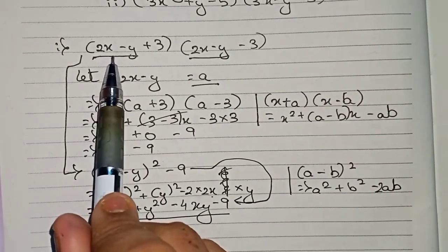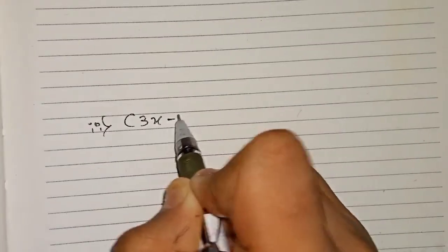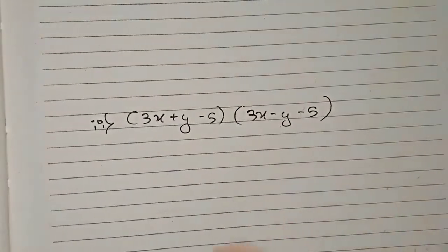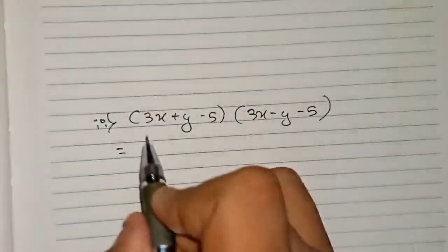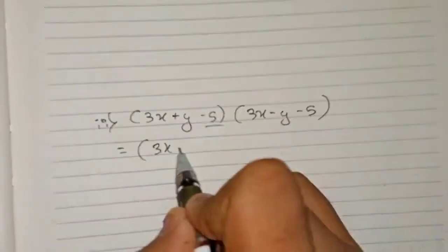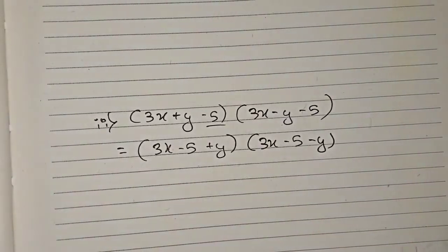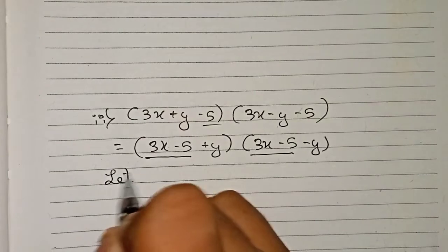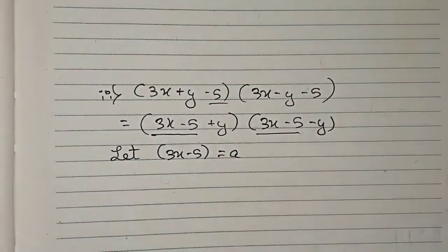So the expanded form of (2x minus y plus 3)(2x minus y minus 3) is 4x squared plus y squared minus 4xy minus 9. Now moving on to the next question: (3x plus y minus 5)(3x minus y minus 5). Here 3x plus y and 3x minus y share 3x but the common part isn't immediately obvious, so we rearrange: (3x minus 5 plus y)(3x minus 5 minus y).